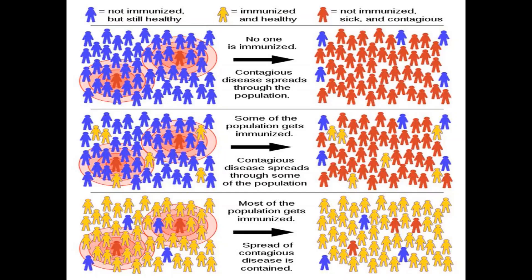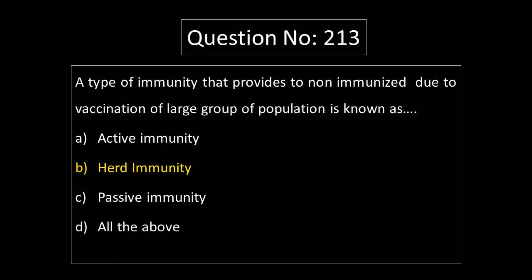Those who are immunized but sick and contagious are able to spread disease. Those not immunized but healthy are protected indirectly. Those immunized and healthy remain protected. This indirect protection of non-immunized individuals through the immunity of the surrounding population is why we call it Herd Immunity. The answer is Option B: Herd Immunity.